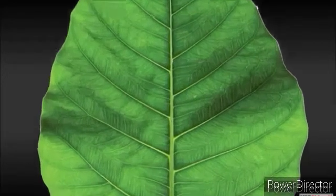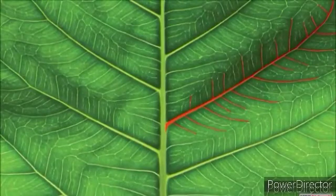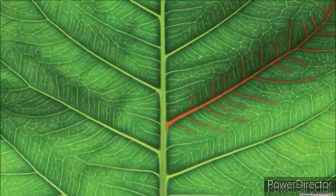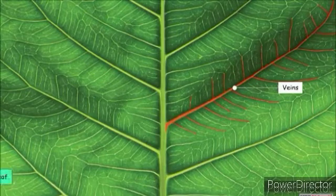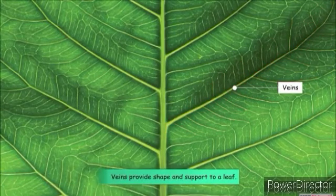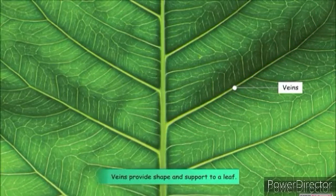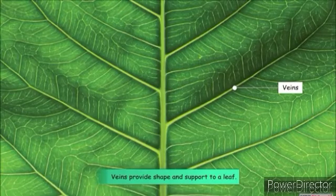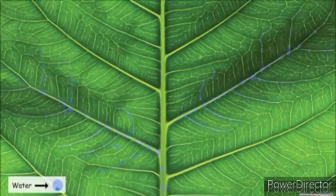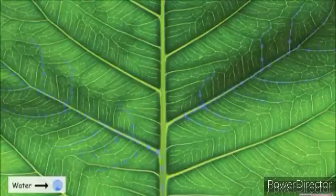There are numerous tiny lines that run throughout the leaf. These are called veins. All these veins, along with the midrib, provide shape and support to the leaf. They also carry water to the different parts of the leaf.